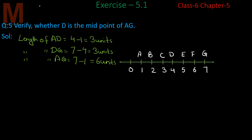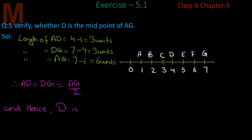So we can see: therefore, AD = DG = 3 units. These two lengths are equal, and this is also equal to AG divided by 2. Hence, D is the midpoint of AG. This was question number 5.